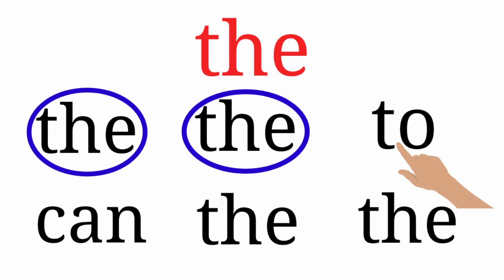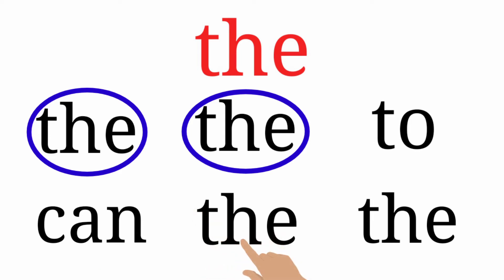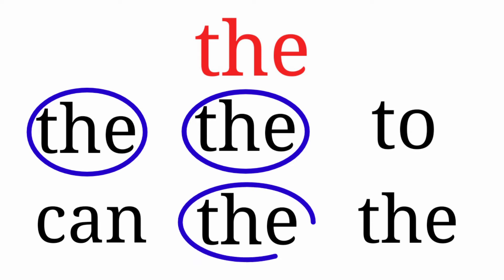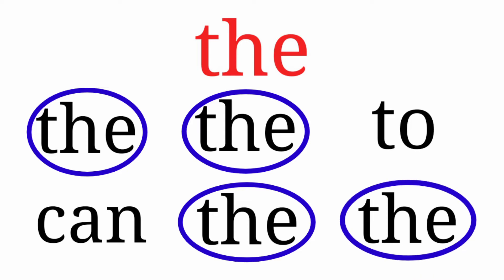Next, T-O — 'to' — which is different. Next one, C-A-N — 'can' — this is also different. T-H-E — this is the same word, so we are going to circle it. Last one, T-H-E — this is also the same word, so we are going to circle it.